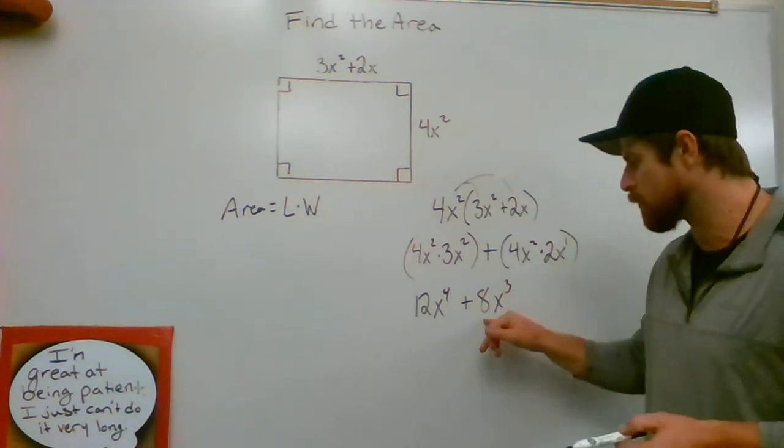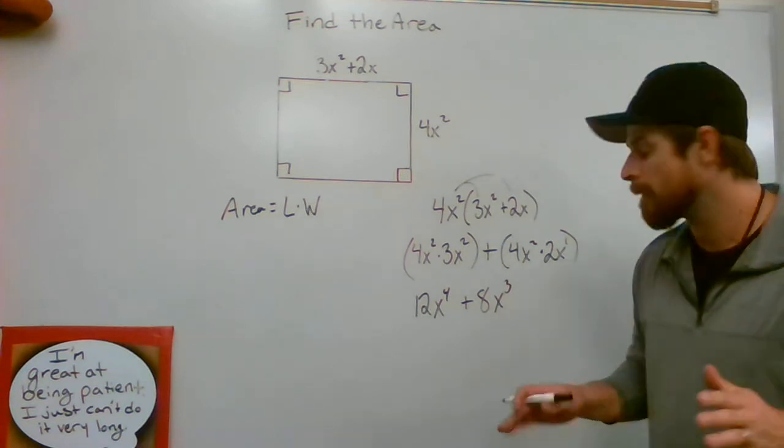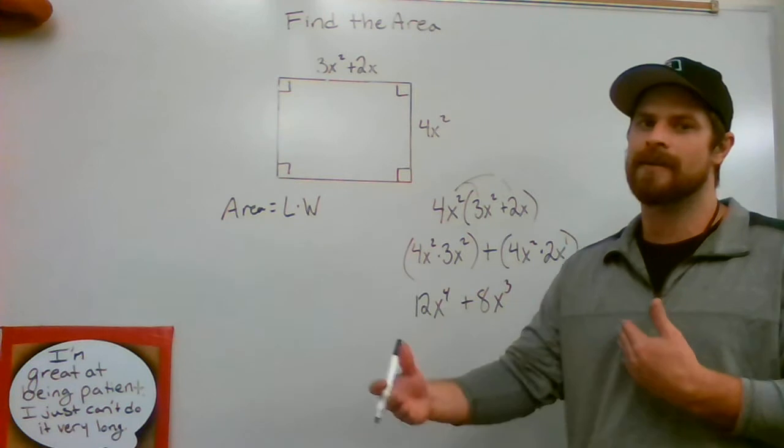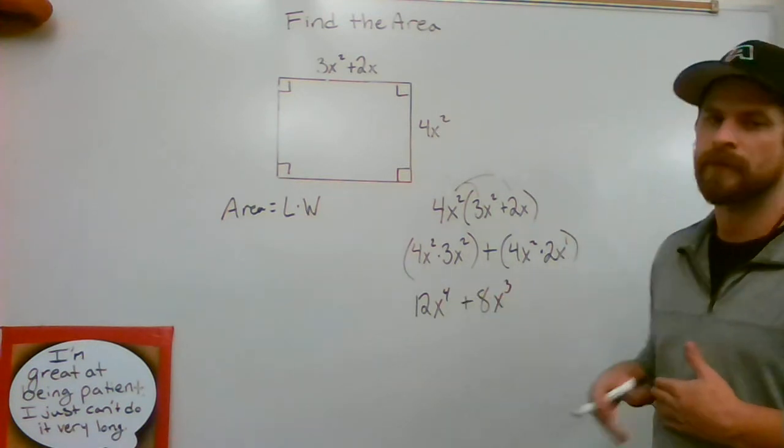If we were being asked to multiply, we'd have no problems. We'd just multiply the 8 and the x to the 4th, add them together, and we'd be good there. But we're being asked to add, and you cannot add things that are not like terms. They'd have to have the same exponent in order for them to be a like term.